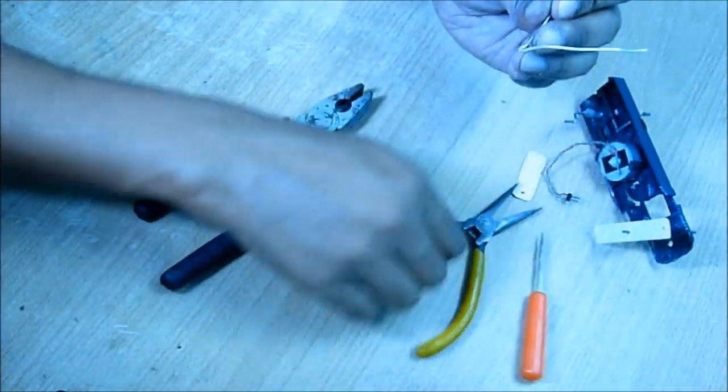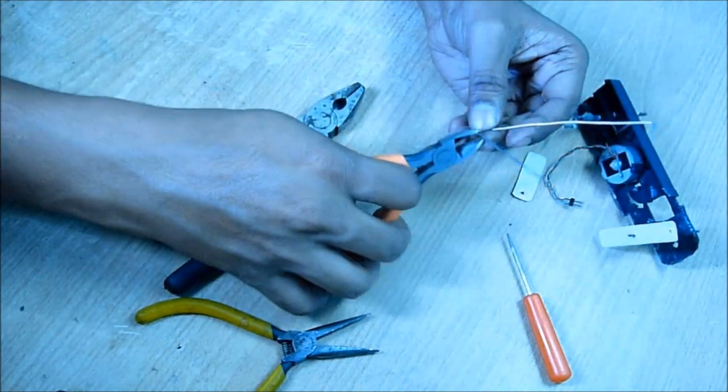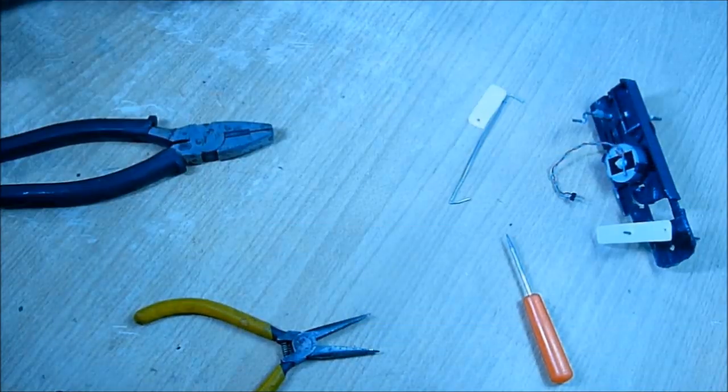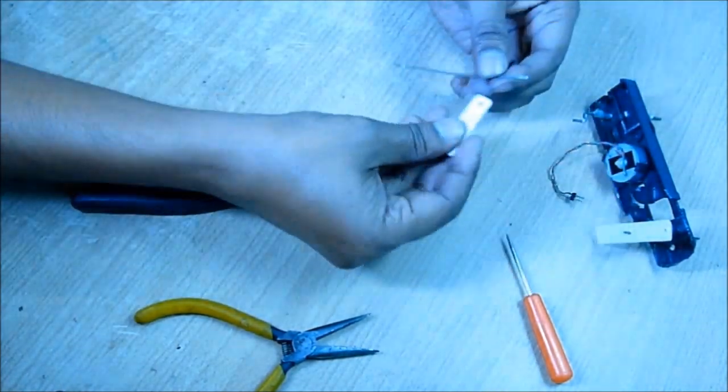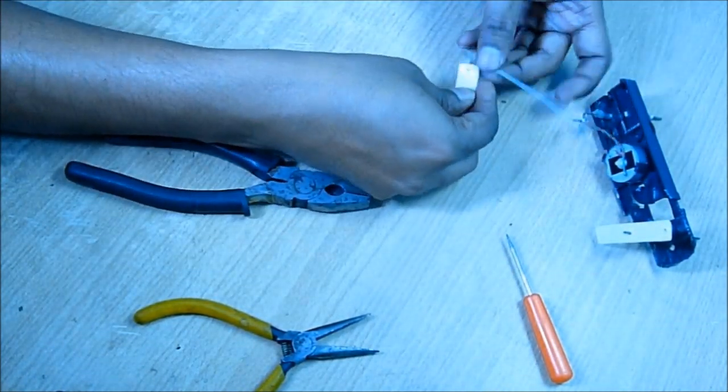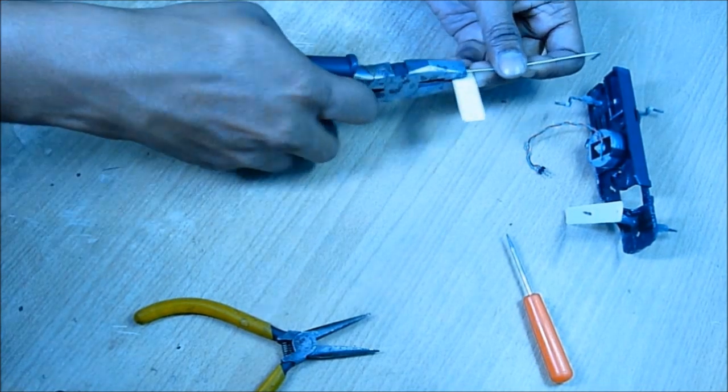This wire we have to fix firmly with the leg, so put some glue and then using a pliers punch it with the leg. It should not be movable. Make the angle more than 90 degrees.